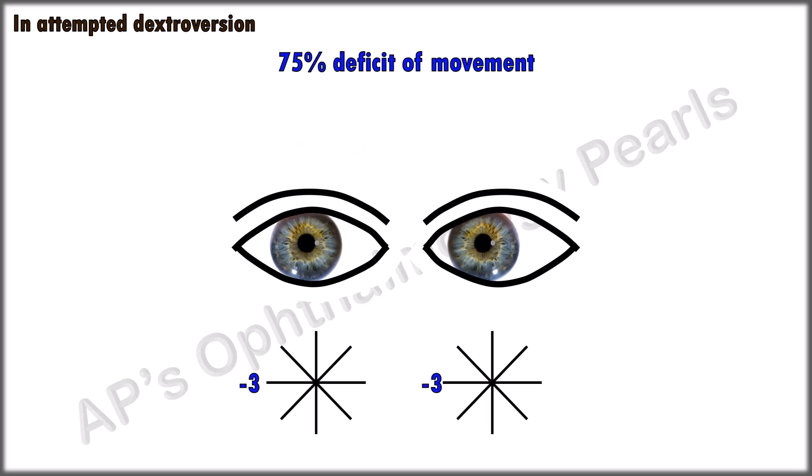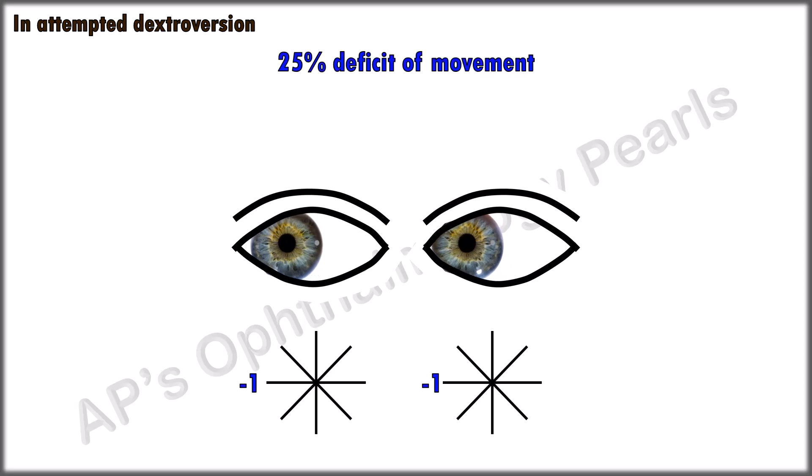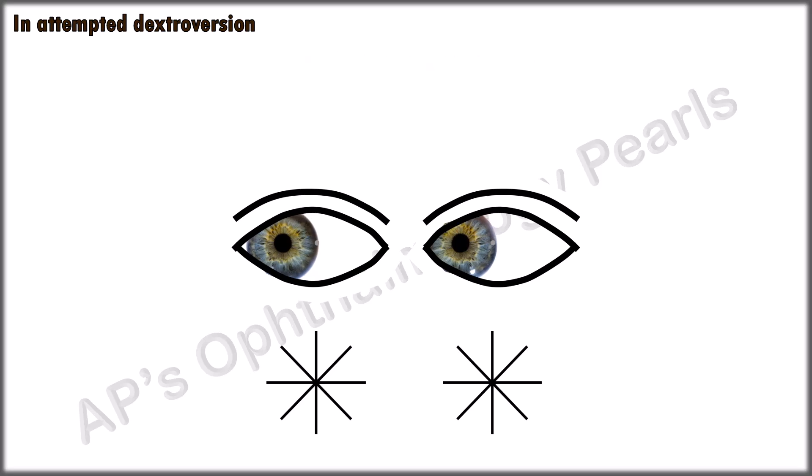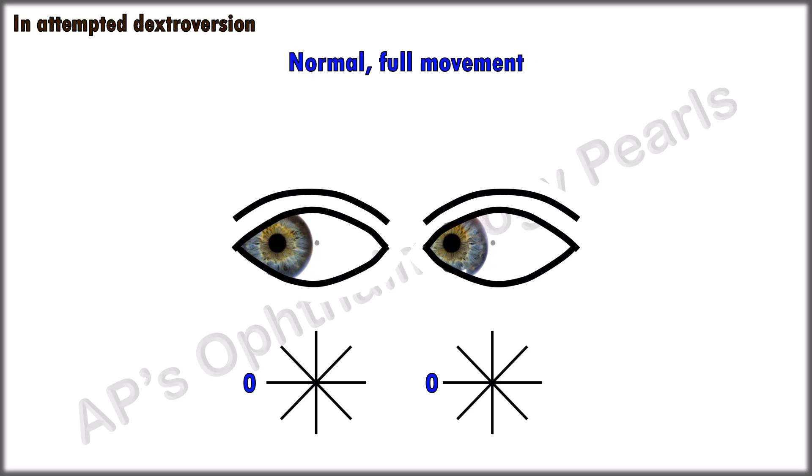Here there is only minimal movement and so would be graded as minus 3. A little greater movement would be minus 2, and a minimal deficit of movement is minus 1. Note that for an abduction deficit, a small bit of sclera is seen, and for an adduction deficit, the junction of the medial and middle third of the cornea has not yet reached the level of the punctum. Normal movements are graded as 0.